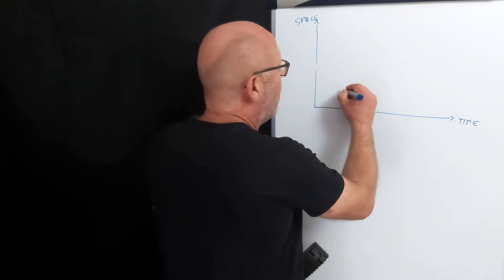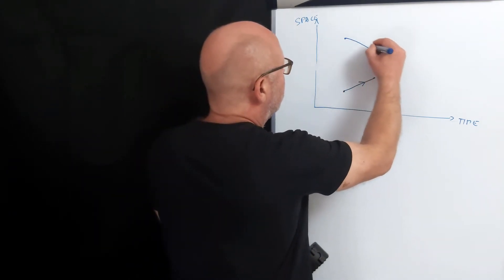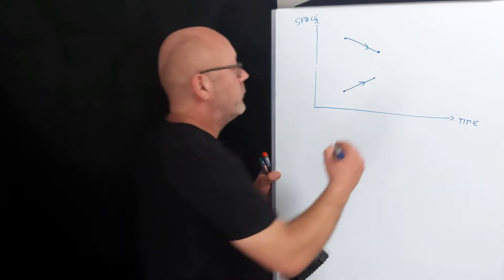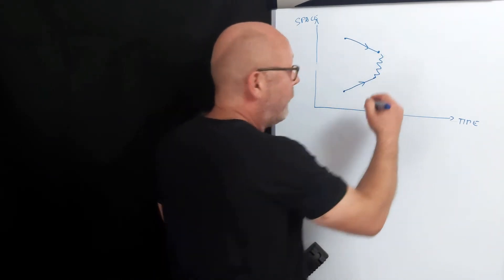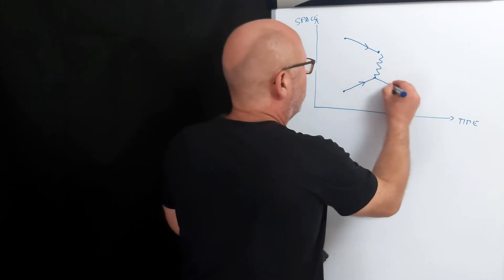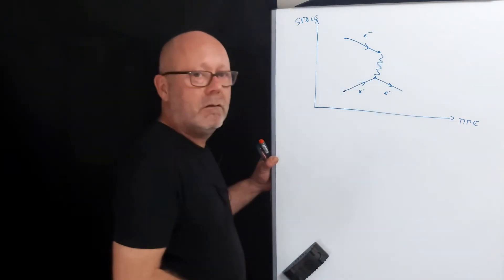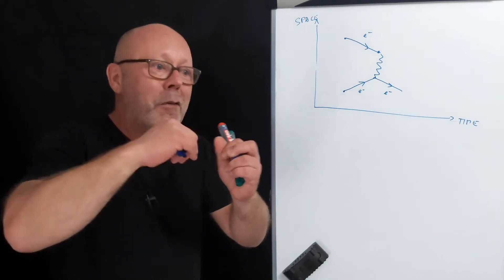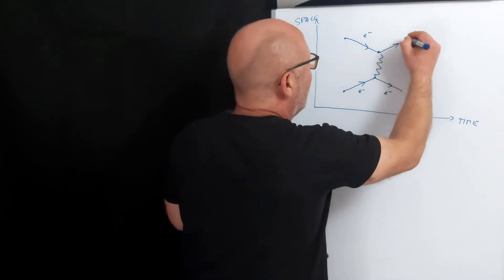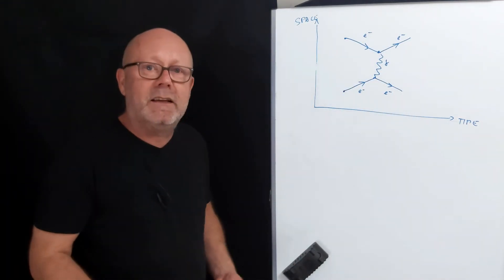You have your electron moving in time and in space, and there's another one doing something similar. This one will emit a photon. Like a bullet coming out of a gun, the gun feels a recoil — so does the electron. It emits a photon which hits the other electron, and by conservation of momentum, the electron goes the other way. And that was a Feynman diagram representing the interaction between two electrons.